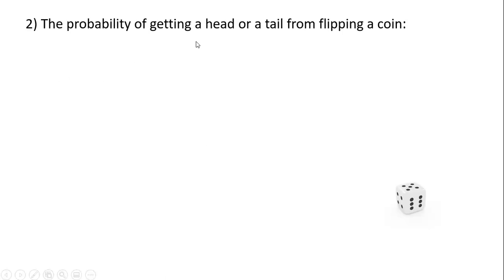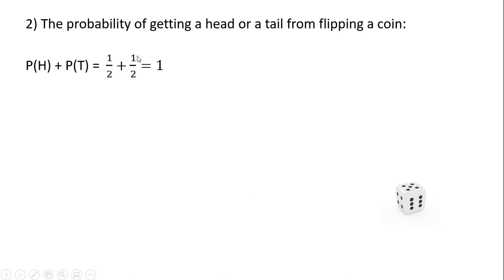The probability of getting a head or a tail from flipping a coin is going to be the probability of getting a head plus the probability of getting a tail. The probability of getting a head is 1 divided by 2, and the probability of getting a tail — there's only one way to get a tail and there are two outcomes — so that's also 1 half. And so we get a probability of 1; this will happen with 100% certainty.